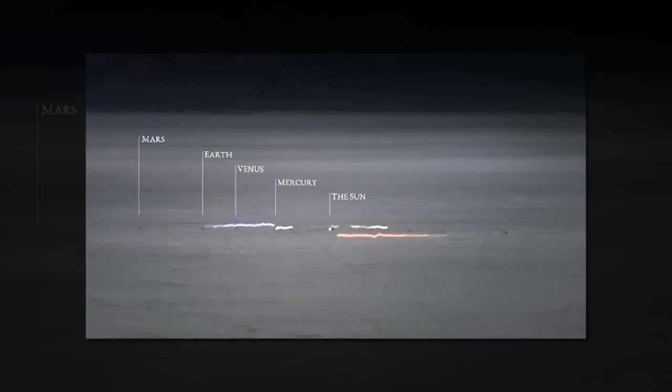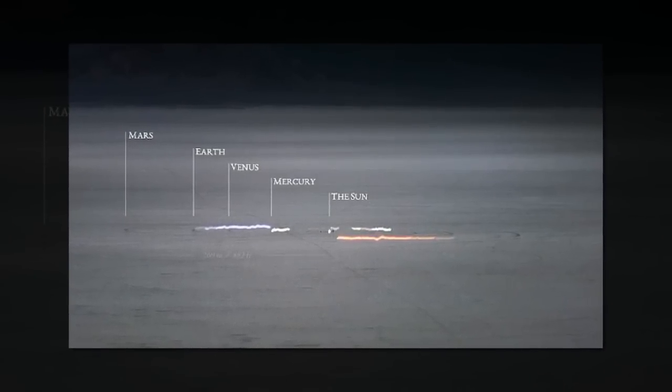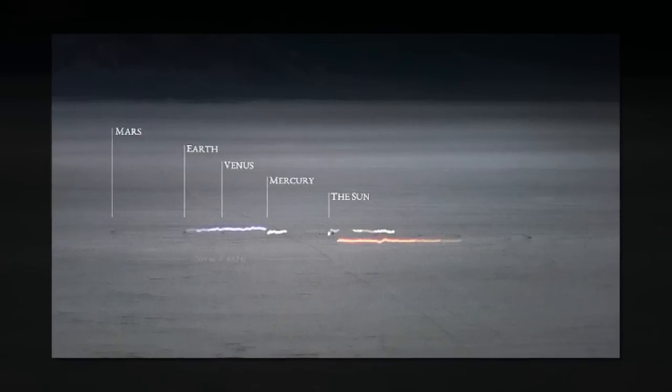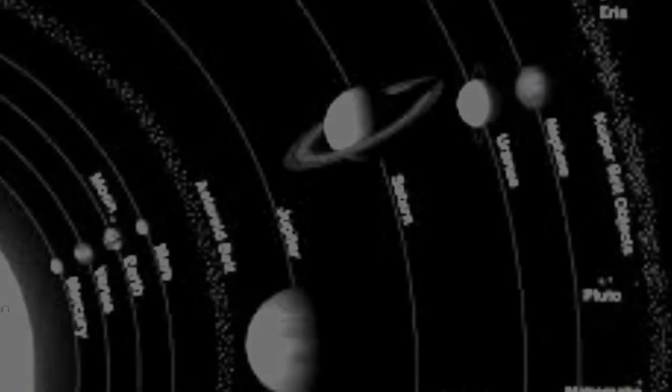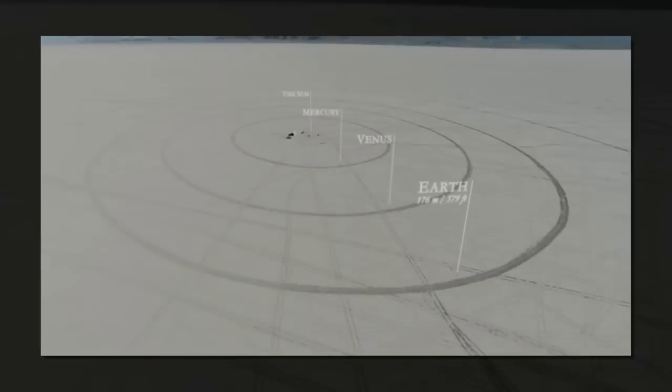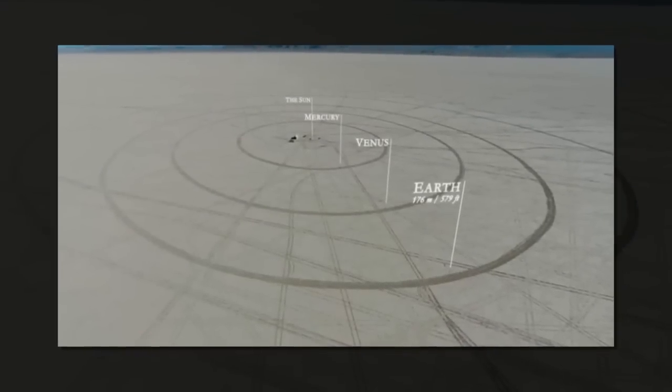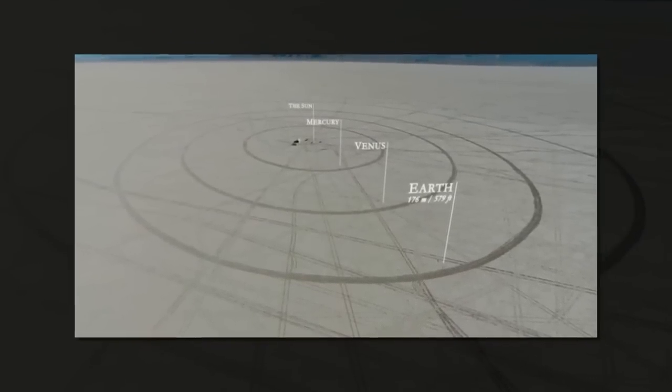They hooked the planets up to lights, and at night they went to the top of a nearby mountain to capture video of the lit planets as they completed their orbits. The result is a 7-minute time-lapse video showing the solar system to scale that is beautiful to watch and gives a great sense of just how huge our solar system really is.